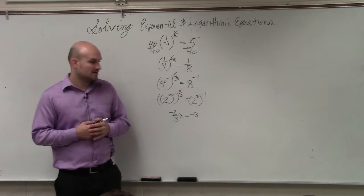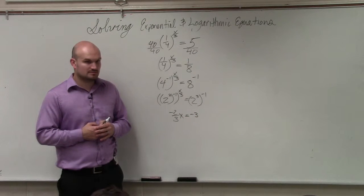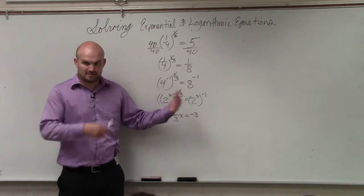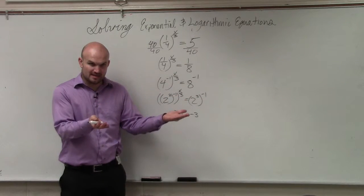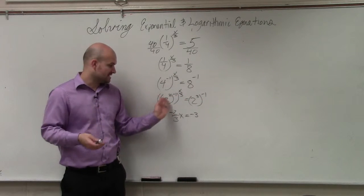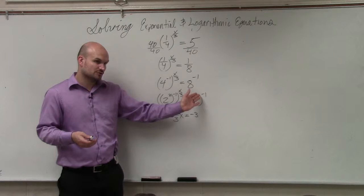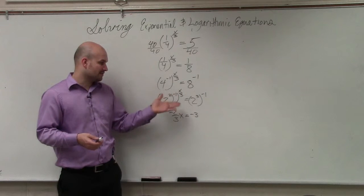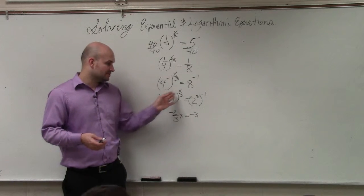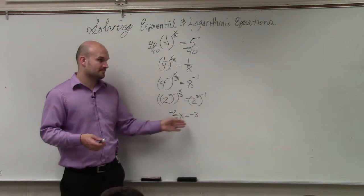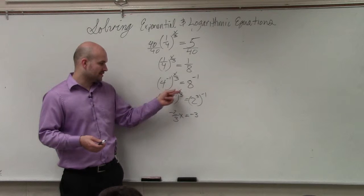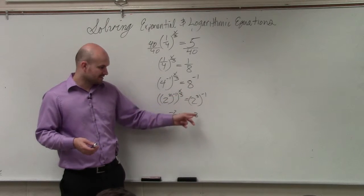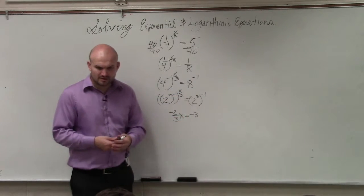Does everybody see how I did that? Because I don't need the bases anymore — the bases are the same. So I just set the exponents equal to each other. When you have powers raised to another power, you just multiply them. So by multiplying all these, I get negative 2 thirds x. By multiplying 3 times negative 1, I get negative 3.